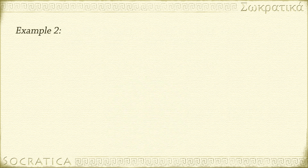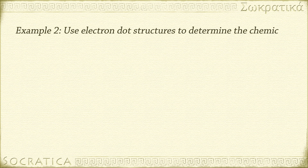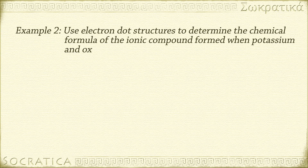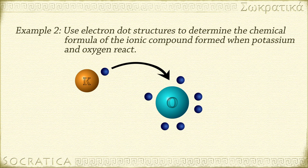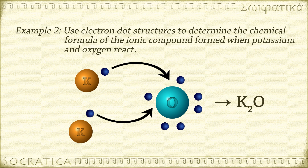Let's do another example and use electron dot structures to determine the chemical formula of the ionic compound formed when potassium and oxygen react. Potassium is a metal that has one valence electron. Oxygen is a nonmetal that has six valence electrons. A potassium atom will lose one electron and will become a cation with a 1+ charge, giving it a filled valence shell. In order for oxygen to have a filled valence shell, it has to take on two electrons. The oxygen anion has a 2- charge. In order to balance that negative 2 charge, it has to bond with two potassium cations, which are each 1+. So the formula of the ionic compound is K2O, potassium oxide.